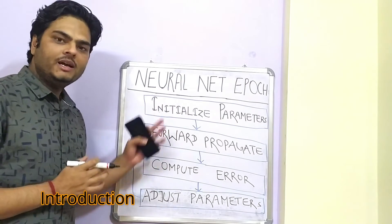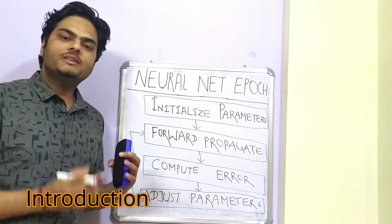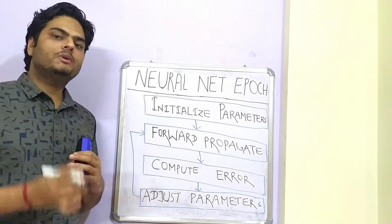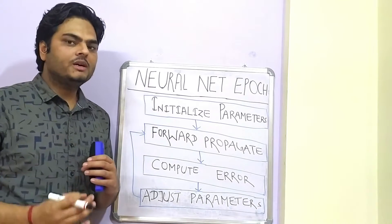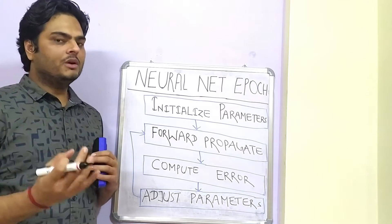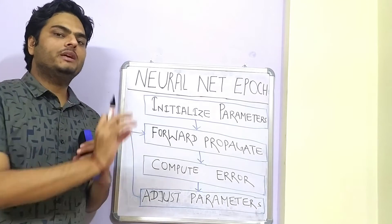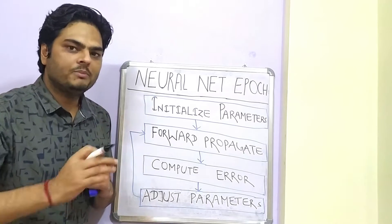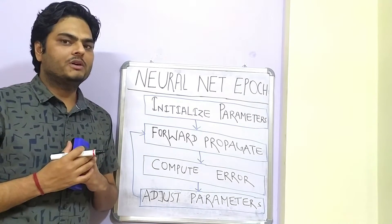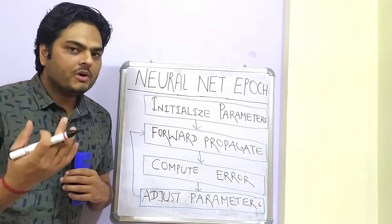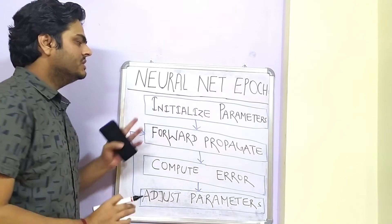These are the steps at a high level that go inside a neural network epoch. Every time you run a neural network model, you would see something like epoch 1 completed, epoch 2 completed. So what is that epoch? An epoch is basically a combination of these four steps.